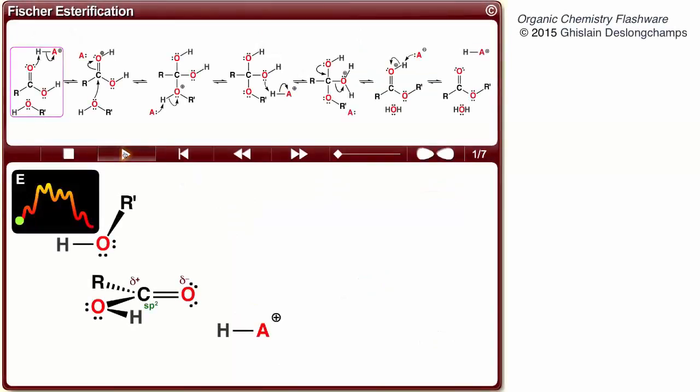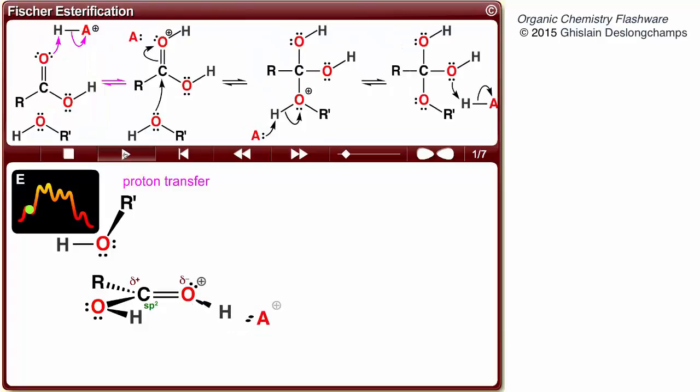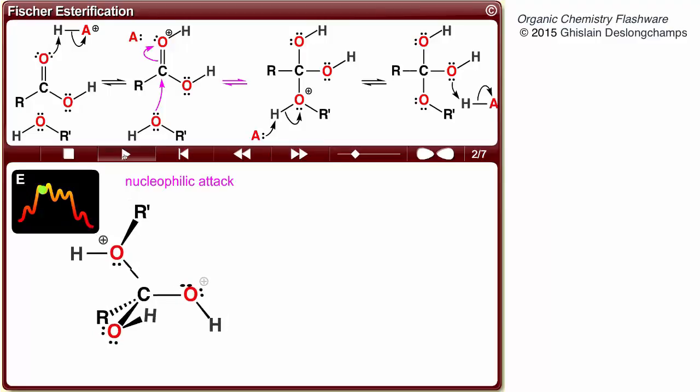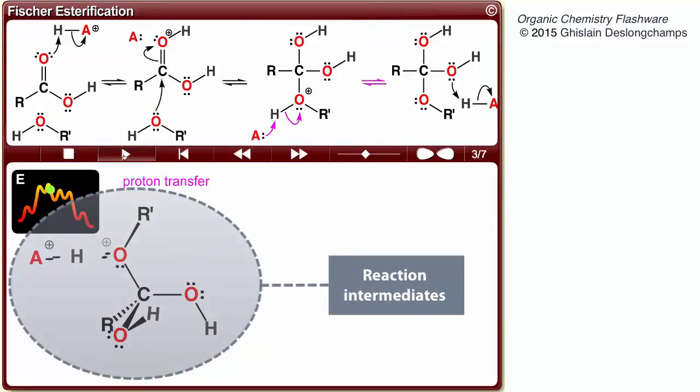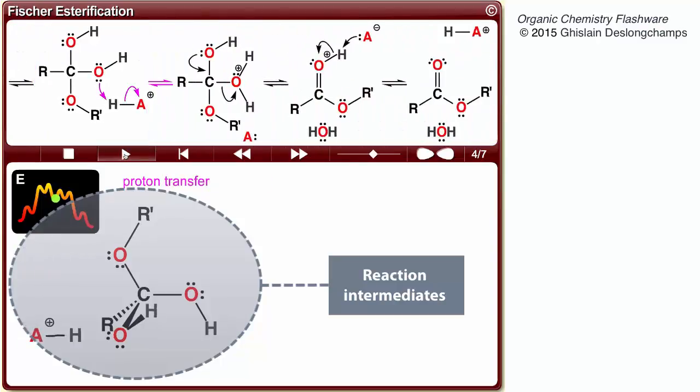For a chemical transformation to occur, many intermediate reactions are usually involved, called mechanistic steps. During these mechanistic steps, chemical bonds are broken and formed, generating intermediate structures or molecules along the way.